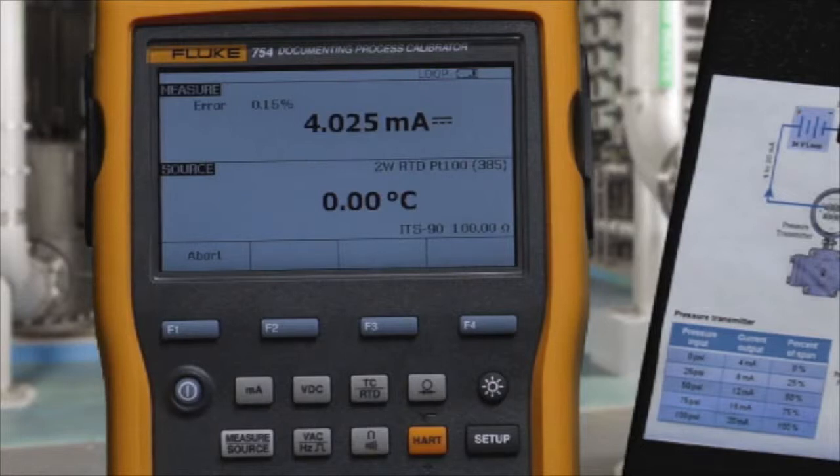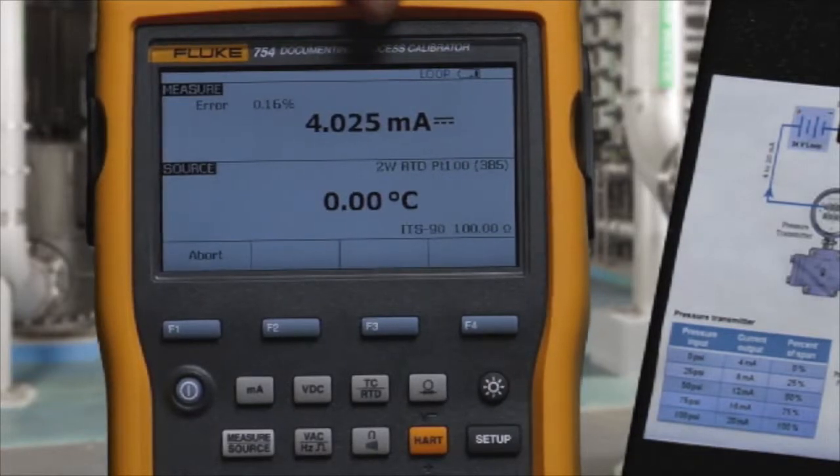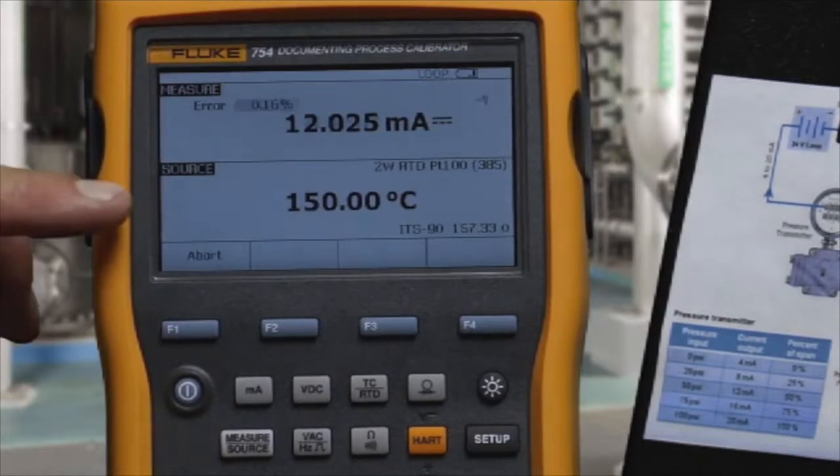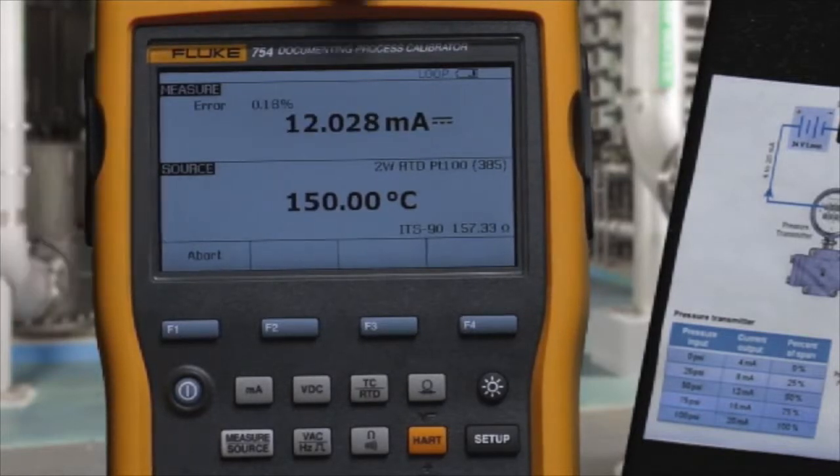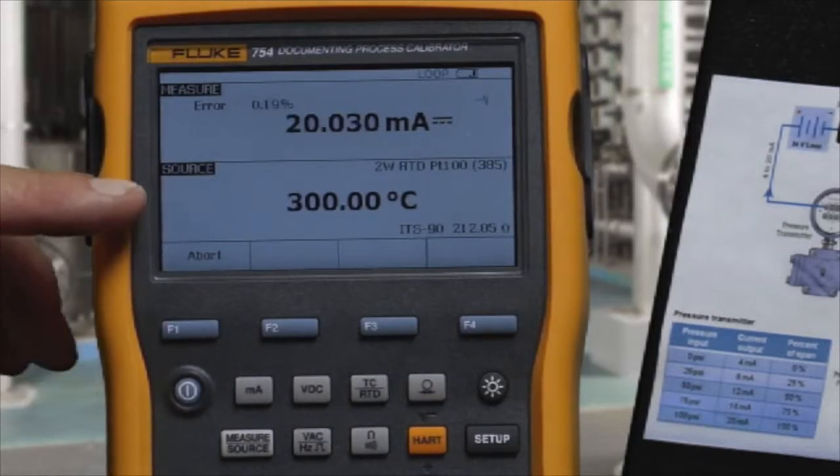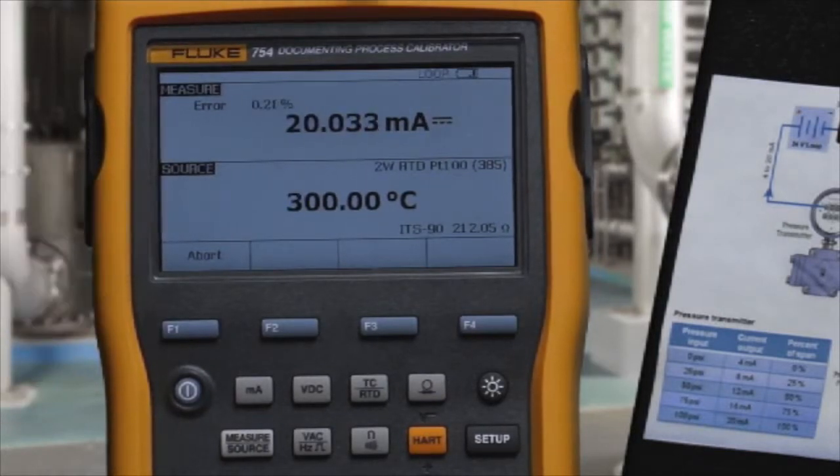0%, 4 milliamps is being measured, error percent is being calculated. The 50% value is applied, milliamp measured, and error percent being calculated. Then the 100% temperature value is applied, milliamp value is measured, and error percent is calculated.